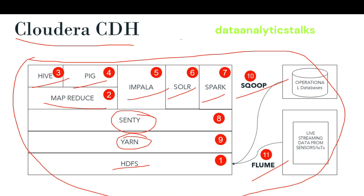However, it is important to note that Cloudera has since moved away from CDH to the Cloudera Data Platform, CDP. So now if you look, you don't see CDH, you can see CDP, which is the new platform that combines the best of CDH and Hortonworks Data Platform, following the merger of Cloudera and Hortonworks. CDP is designed to be the next-generation data platform that can handle various data workloads from edge to AI.